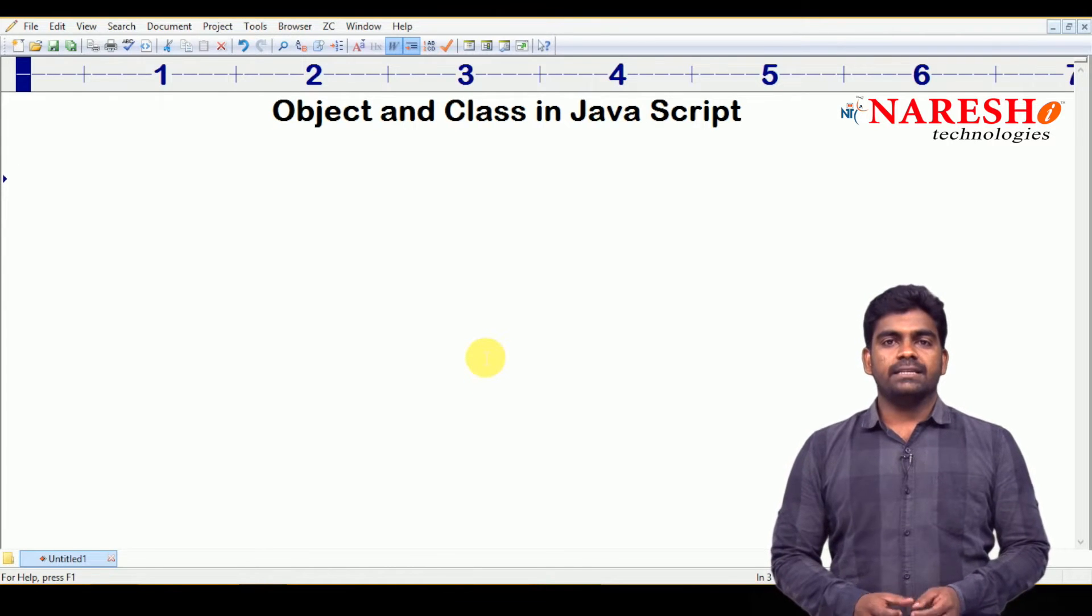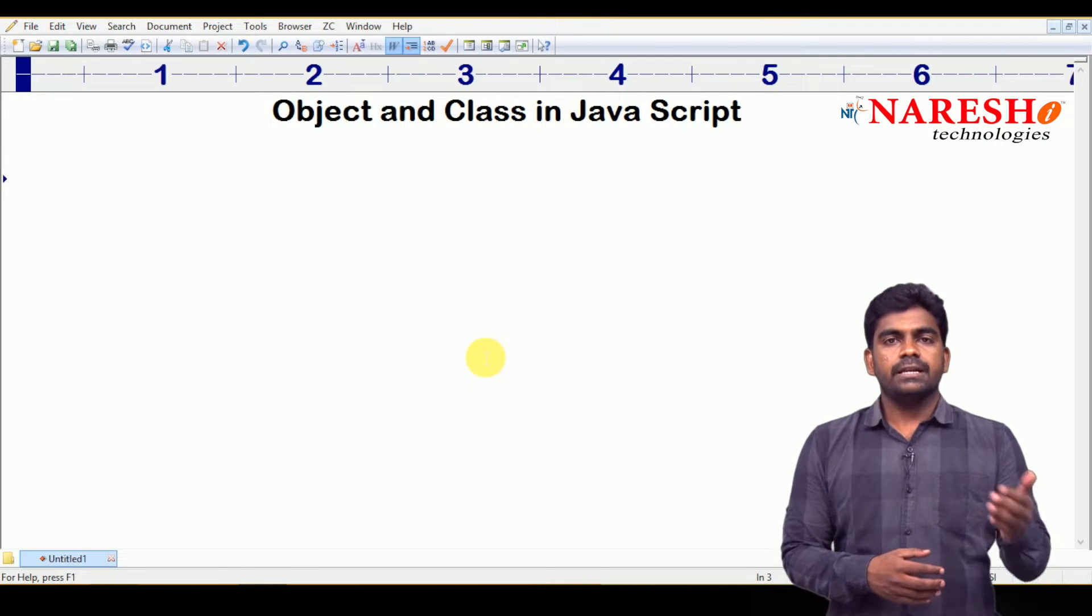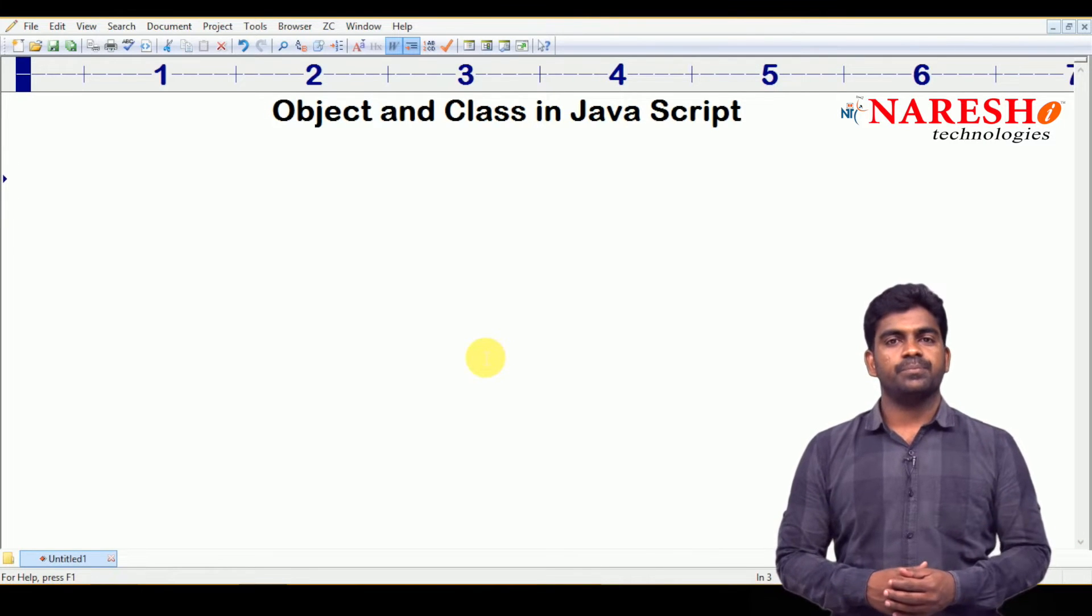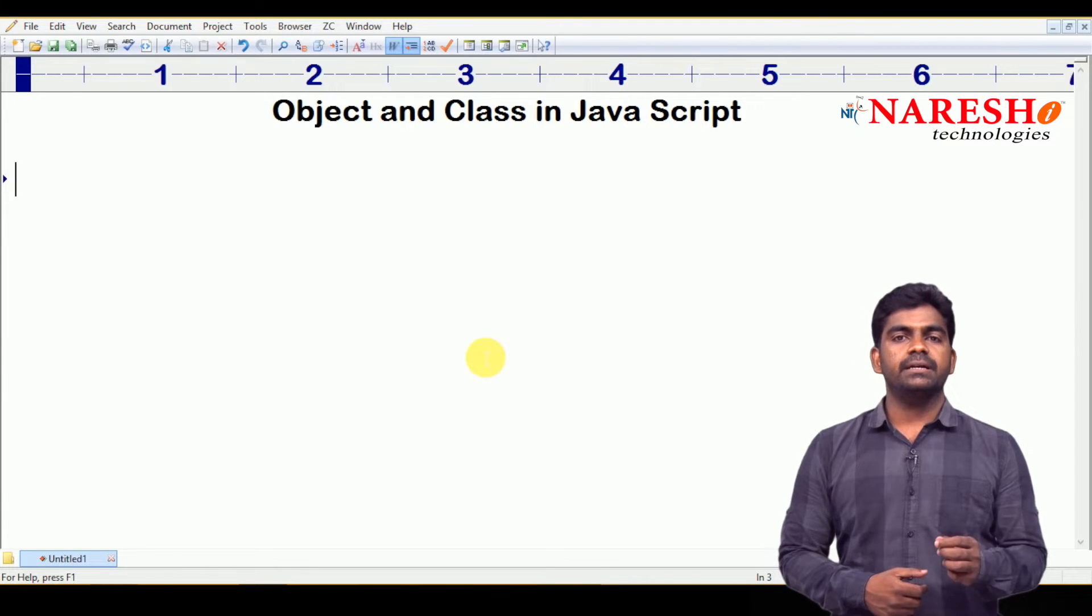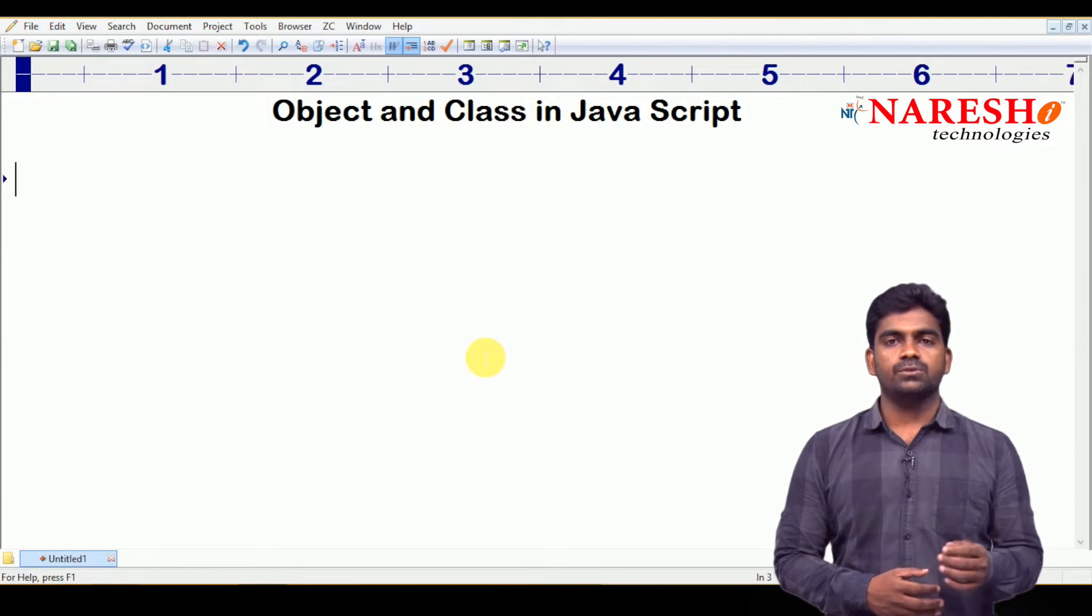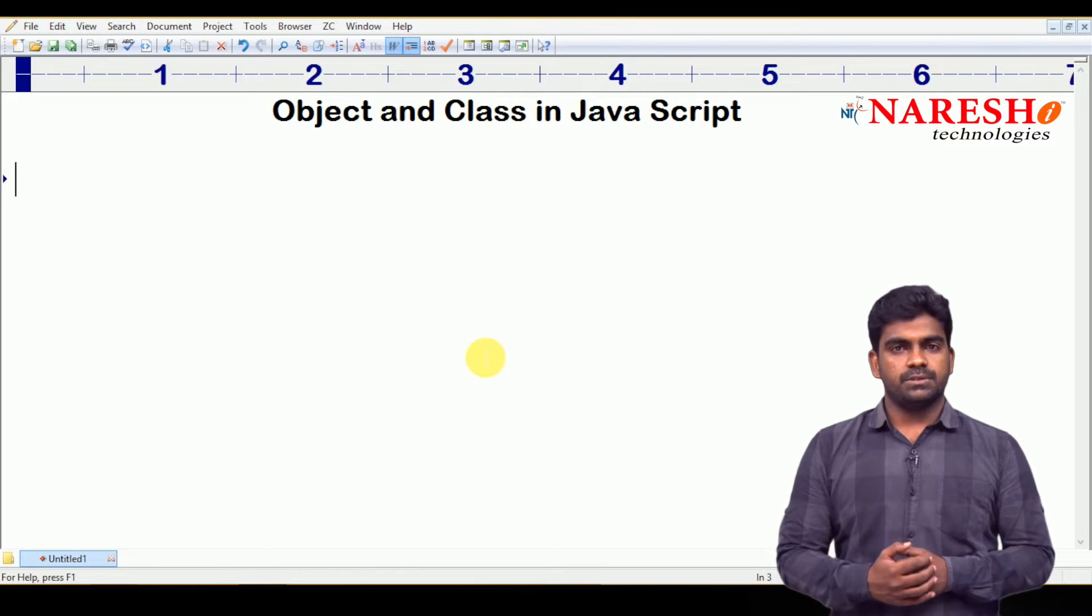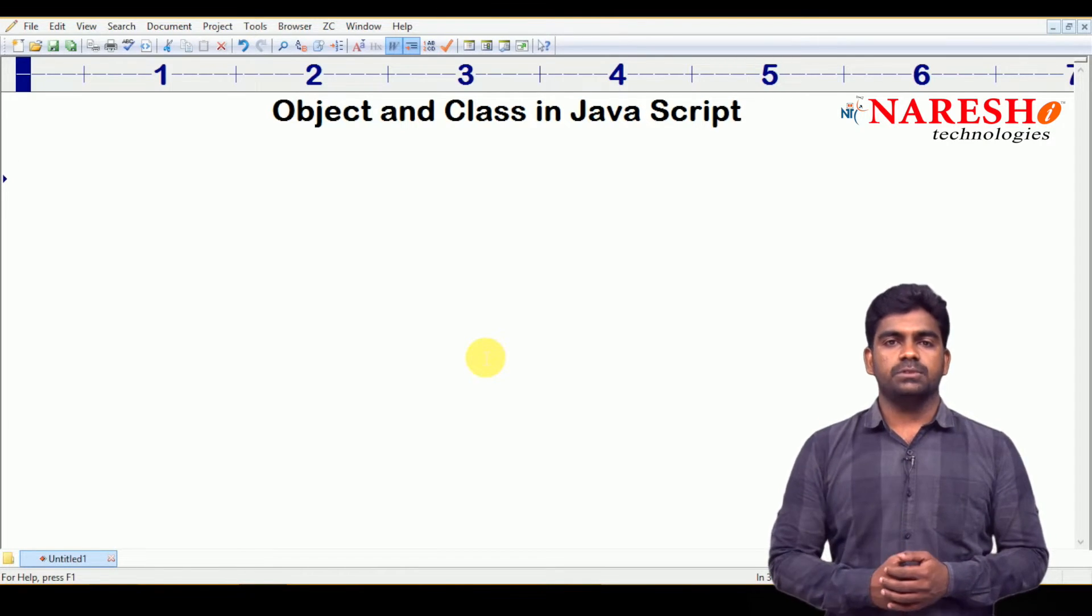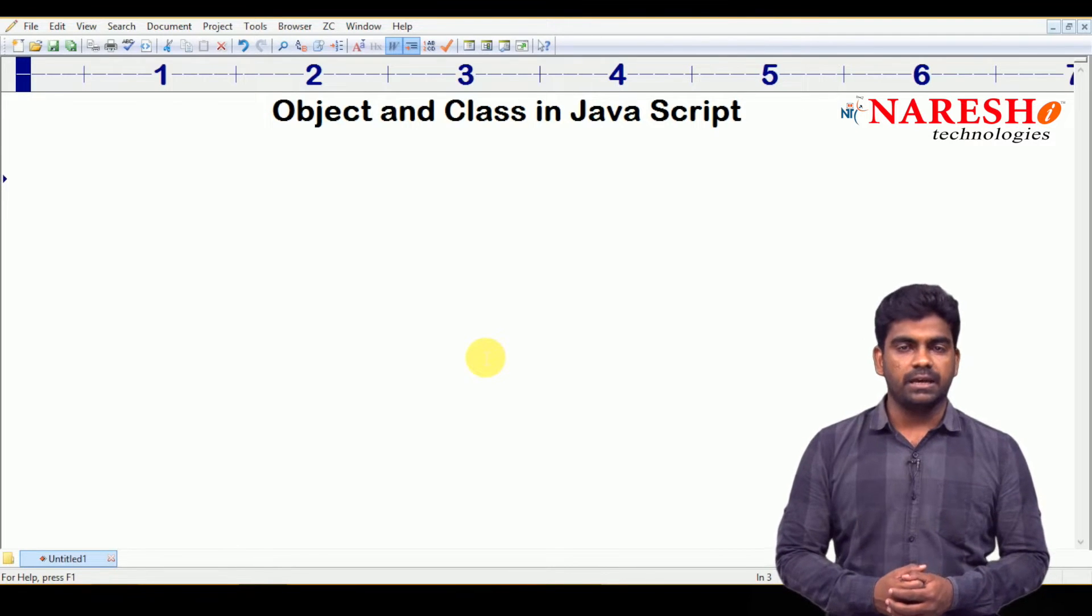Hi everyone, welcome to Naresh Technologies. This is Srinivas and this video is a continuation of the last video. In the last video, we started how to implement data structures and algorithms using JavaScript. To implement, we use two concepts: classes and objects. And of course, JavaScript is an object-oriented programming language.